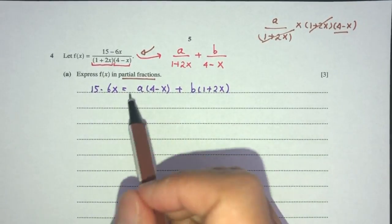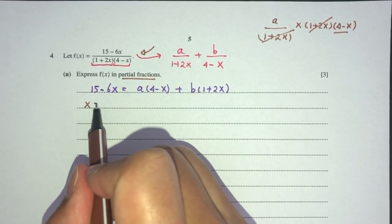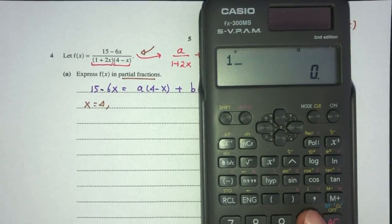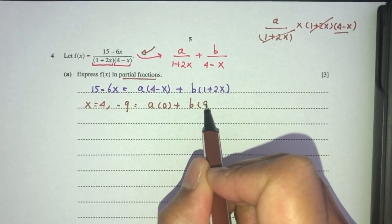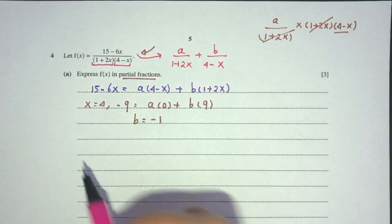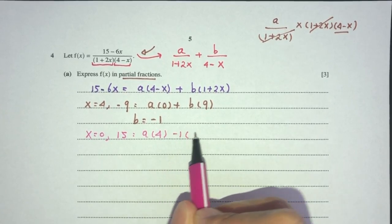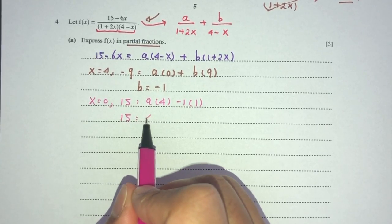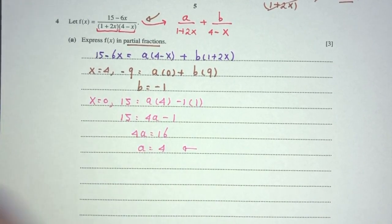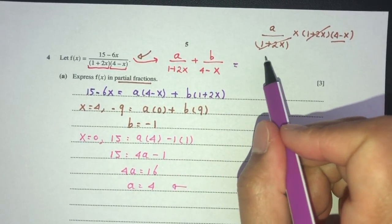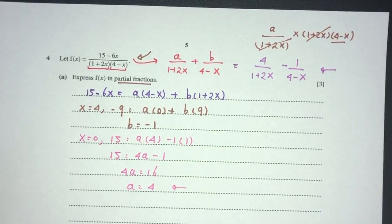Choosing x = 4: 15 − 24 = −9 = B(9), so B = −1. Choosing x = 0: 15 = 4A + (−1)(1), so 4A = 16, giving A = 4. Substituting back, the partial fraction expression is: f(x) = 4/(1 + 2x) − 1/(4 − x). This is the answer for part a.